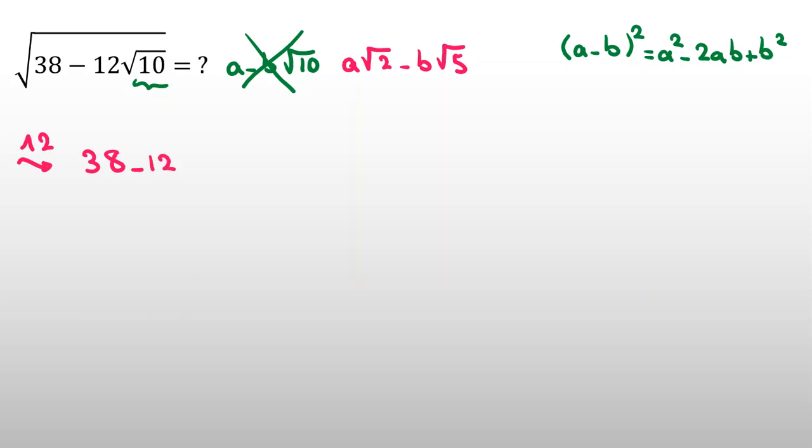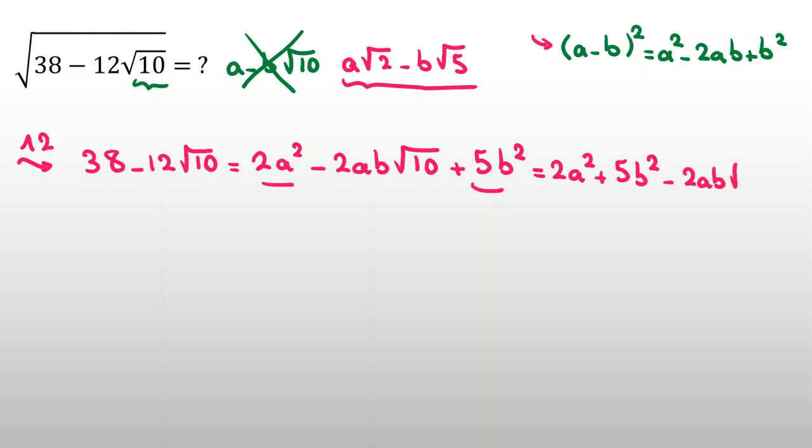If we raise both sides to the power of 2, 38 minus 12 root 10 equal to 2a squared minus 2ab root 10, by this identity, and we'll raise this to the power of 2, plus 5b squared. Now, I can rearrange: 2a squared plus 5b squared minus 2ab root 10.